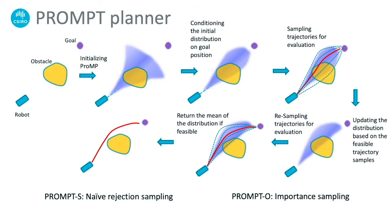The progression of the planning steps is shown from left to right in a cyclical fashion. The motion primitive distribution is first conditioned on the goal or waypoint position. Trajectories are then sampled from this conditional distribution to perform feasibility evaluation. Infeasible samples are discarded and the underlying distribution updated to best represent the feasible trajectories. This step is performed iteratively until the mean of the distribution is a feasible trajectory. Choosing the mean over the first successful sample trajectory to execute shows better robustness during execution.